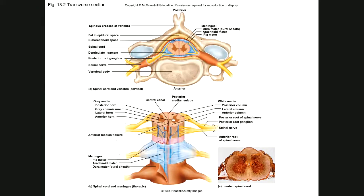Those two areas are referred to as the white matter and the gray matter. The white matter is distributed into columns — posterior, lateral, and anterior columns. On the anterior surface of the spinal cord, you see a wide groove known as a fissure, called the anterior median fissure. That gives you an indication of which is the anterior part, and therefore this would be the anterior column.